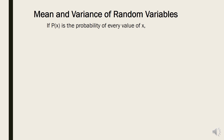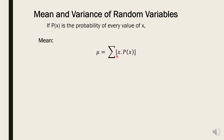If p of x is the probability of every value of x, then the formula for the mean is: mu is equal to the summation of x times p of x, where x is the random variable and p of x is the probability of the given random variable.